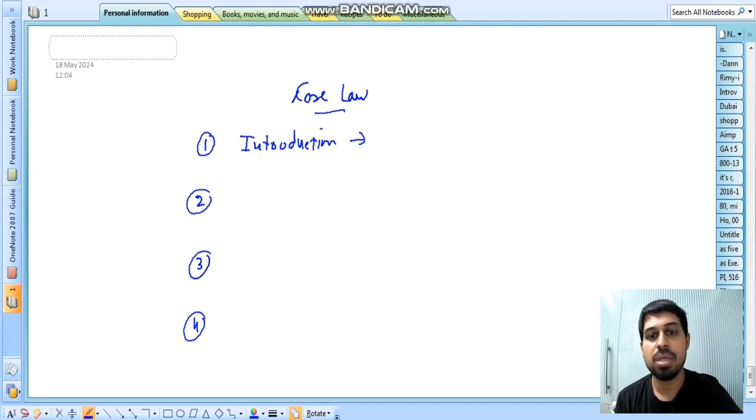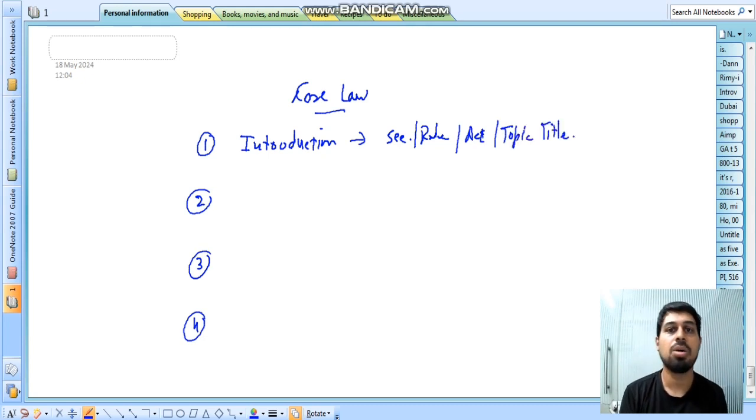What's going on in the introduction? Whatever the relevant section number, rule number, act name, year, or topic title - independent director, auditor, secretarial audit, whatever it is, shares issued at premium, discount, ESOP. So, this is what you have to tell in the introduction.